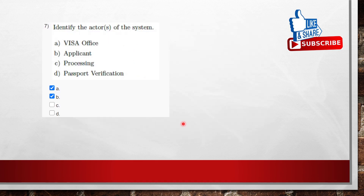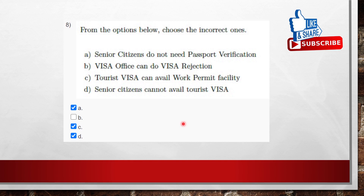Question 8: choose the correct statements. Option A — senior citizens do not need passport verification — this is false, because every applicant must go through passport verification. Visa Office can do visa rejection — this is true. Tourist visa can avail work permit facility — this is false. Senior citizens cannot avail tourist visa — this is false, anyone can avail tourist visa. The correct answers are A, C, D — wait, the answer is the options that are correct, which is that visa rejection is true and the others are false, so the answer is A and C and D based on the figure.